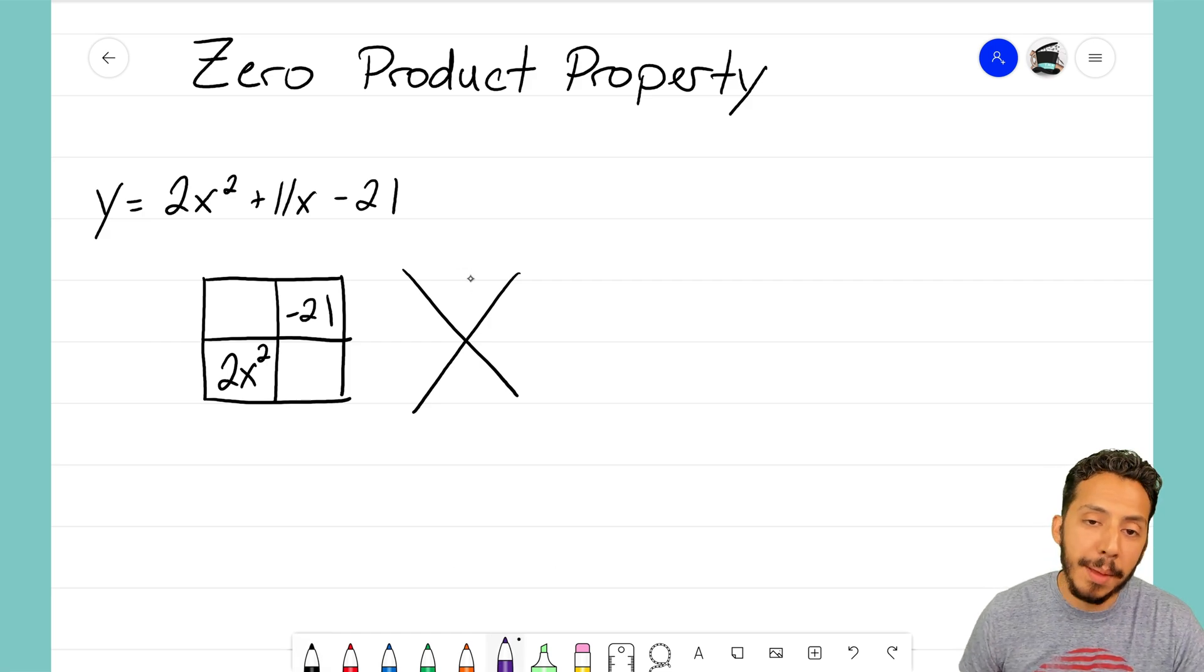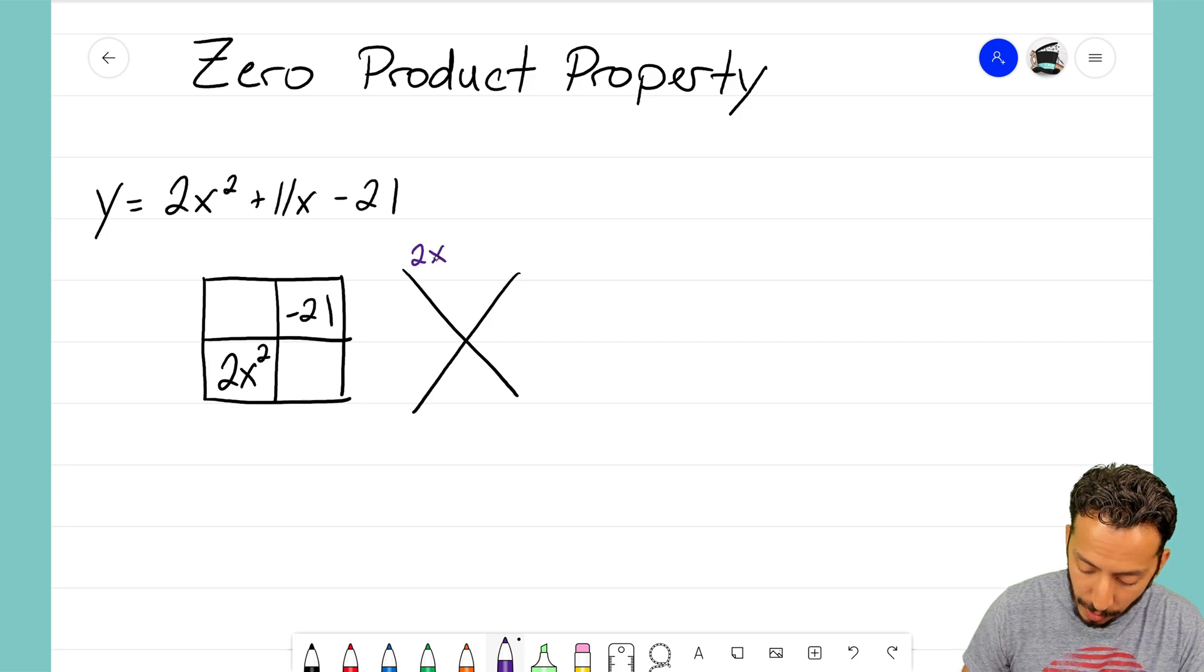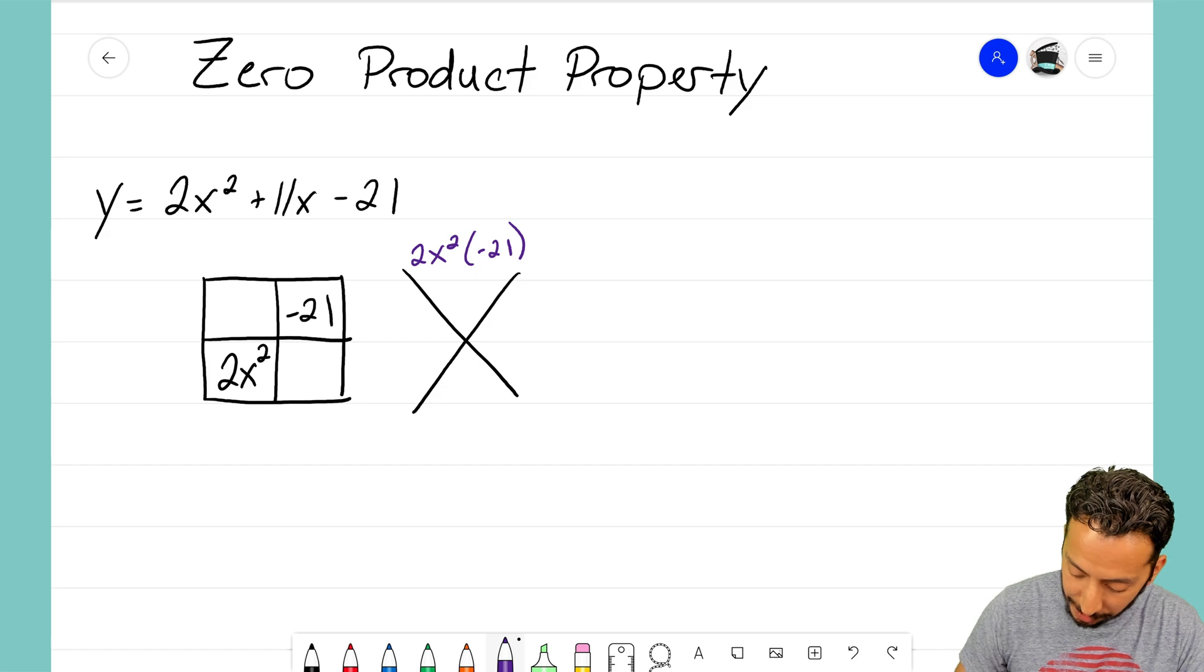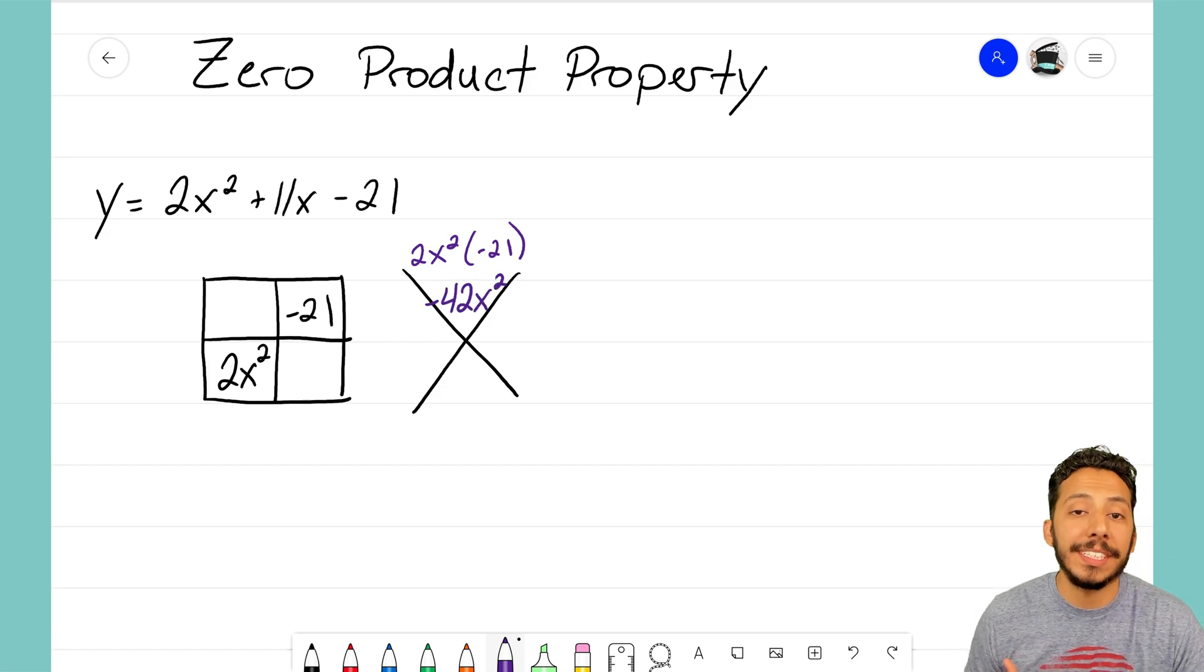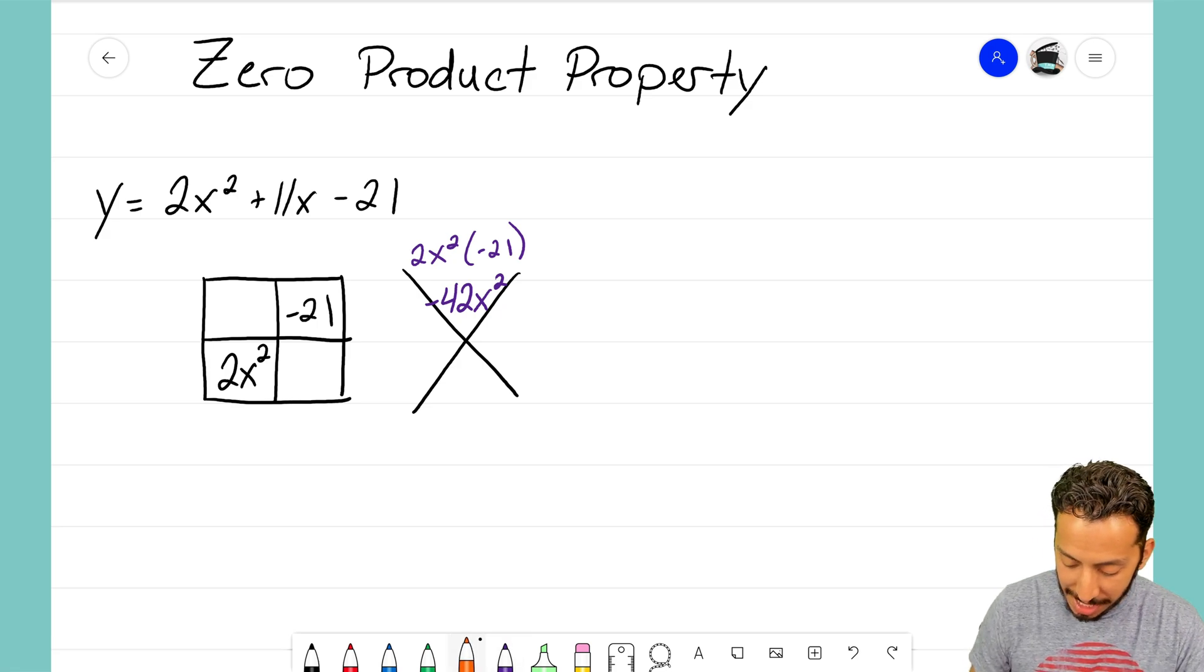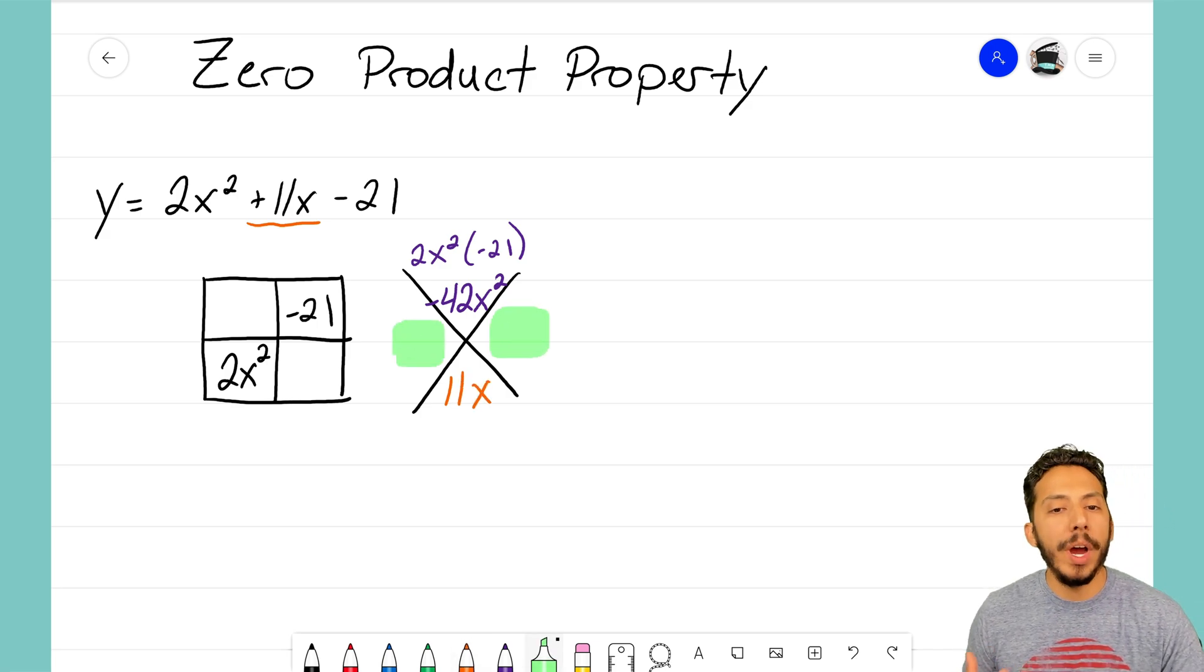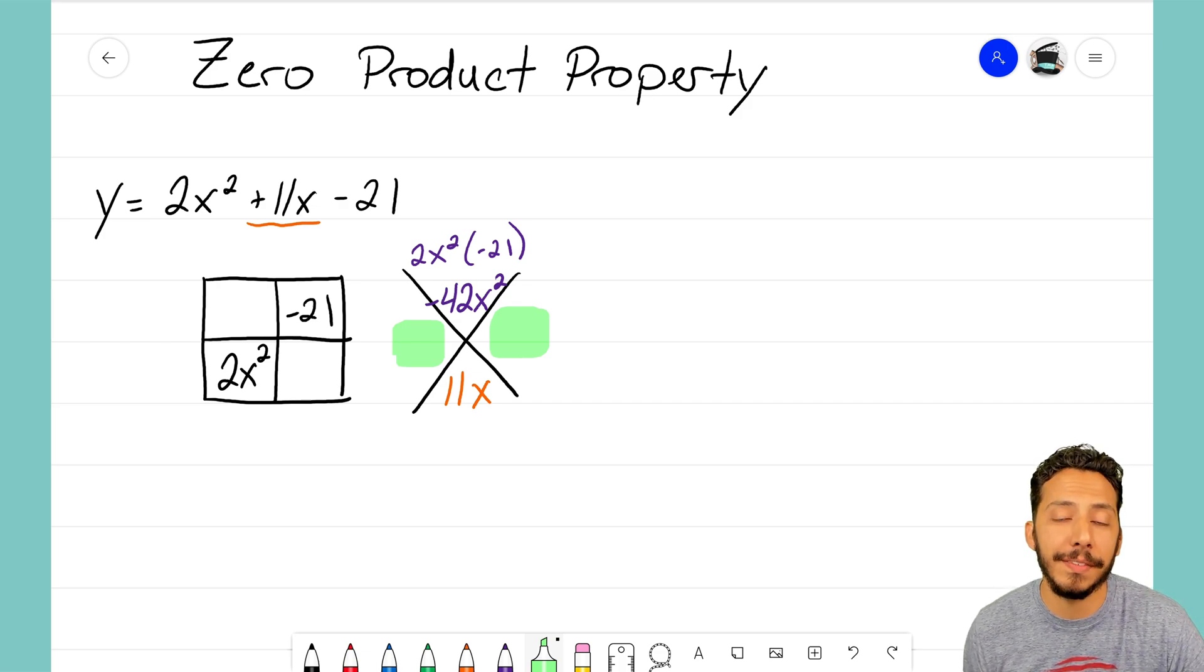Now I know to turn that into the top part of my diamond problem, I'm going to need to multiply those two terms. So I'm going to multiply 2x squared times negative 21. That's going to create for us negative 42x squared in the top of my diamond problem. And I know that the two terms that I'm trying to find are going to also need to add to 11x. So now I need to think about what two factors of negative 42 are going to also add to positive 11.